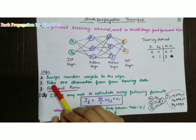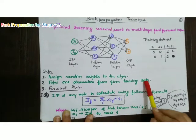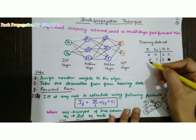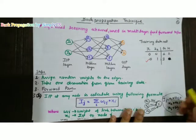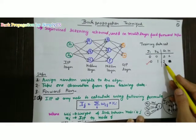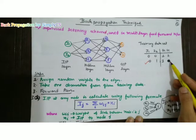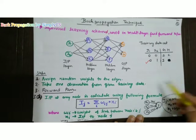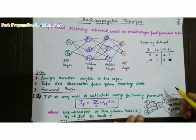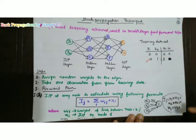Second, take one observation from the given training data. Suppose this training data was 0-1, so I should ideally output 1-0. But we will apply some procedures and find out what output is actually coming.